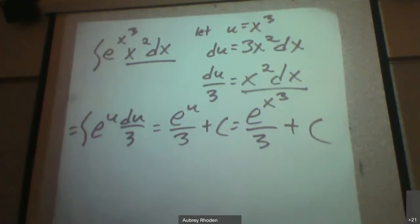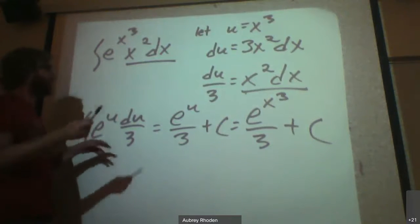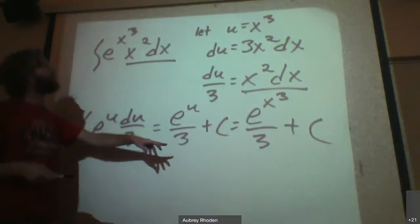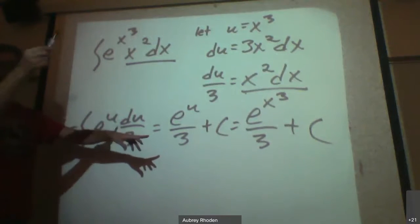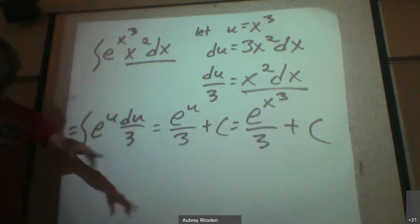which is going to equal e to the x cubed divided by 3 plus a constant. And remember, when we're doing a u-substitution, we're trying to accommodate for the chain rule. And so if I took the derivative of this, if I took the derivative of e to the x cubed, well, the derivative of e is just e, but what is it going to spit out? It's going to spit out 3x squared. So this 3 that is appearing on bottom is going to account for that. And so when you have the chain rule spit out 3x squared, the 3 and the 3 will cancel each other out.